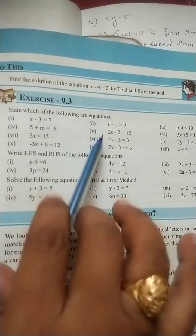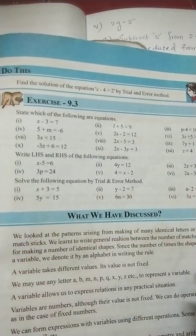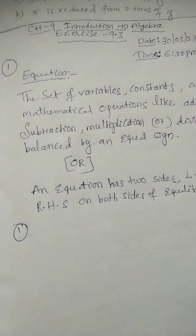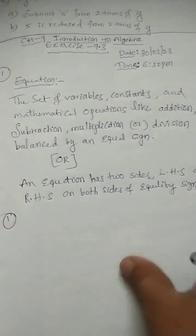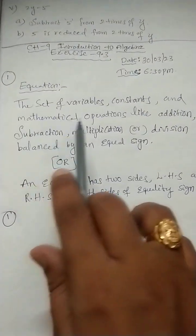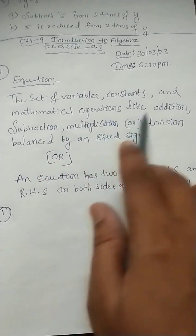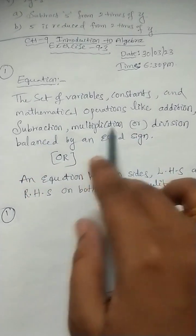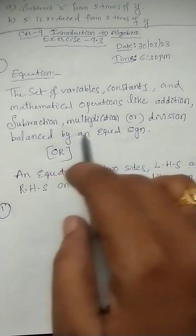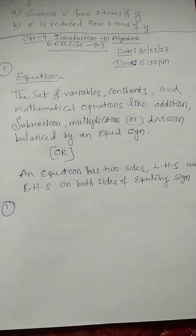Before going to this question, first, what is an equation? You should know what is an equation. An equation is the set of variables, constants and mathematical operations like addition, subtraction, multiplication or division, balanced by an equal sign.